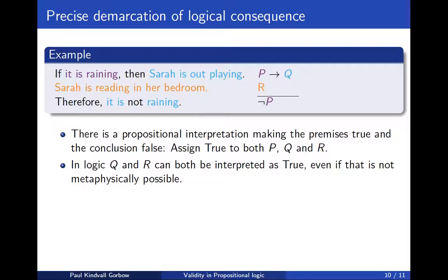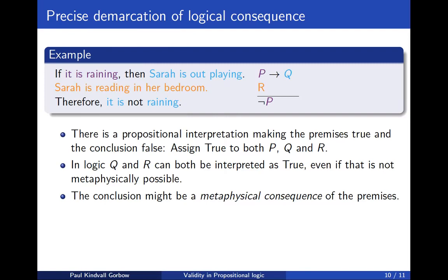The point here is that in logic we can assign true to both Q and R, even if that is not actually possible in reality. It is, in a sense, not possible that Sarah is both reading in her bedroom and at the same time out playing. However, from the perspective of logic, there is no contradiction between these two — we can assign true to both of them. One might say that this is a case of an argument where the conclusion is a metaphysical consequence of the premises, but we cannot say that it is a logical consequence of the premises.